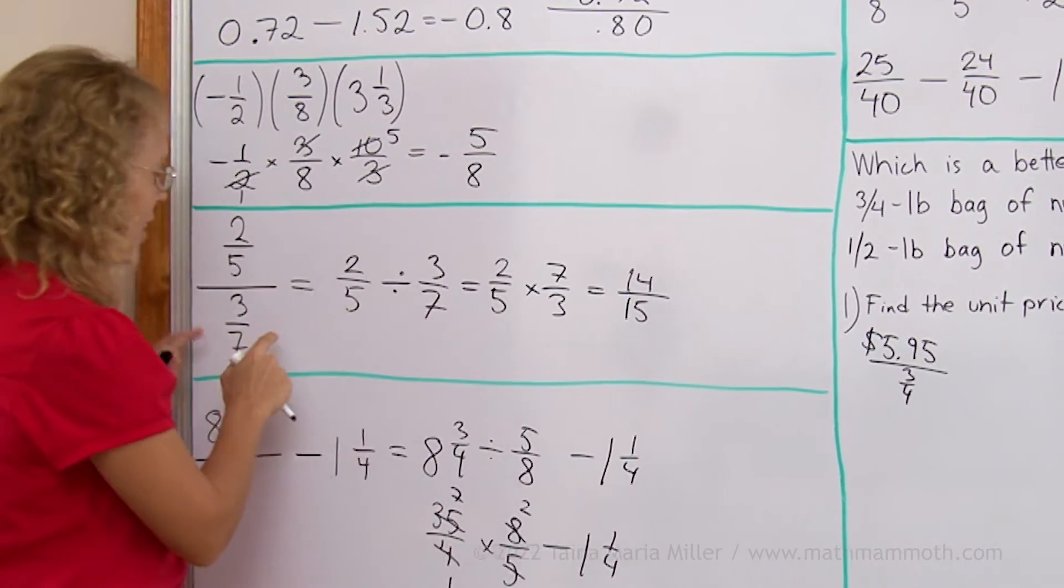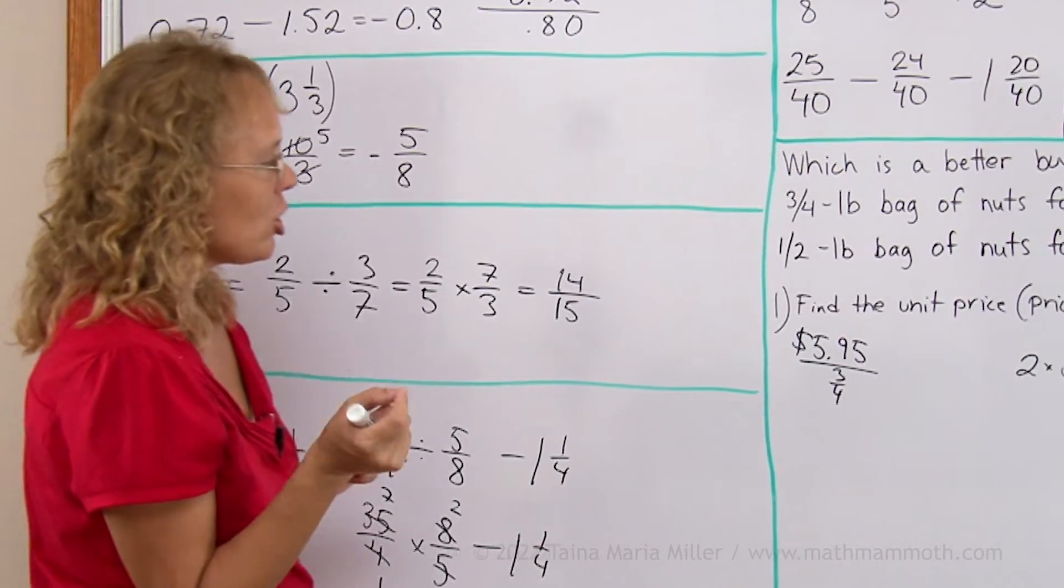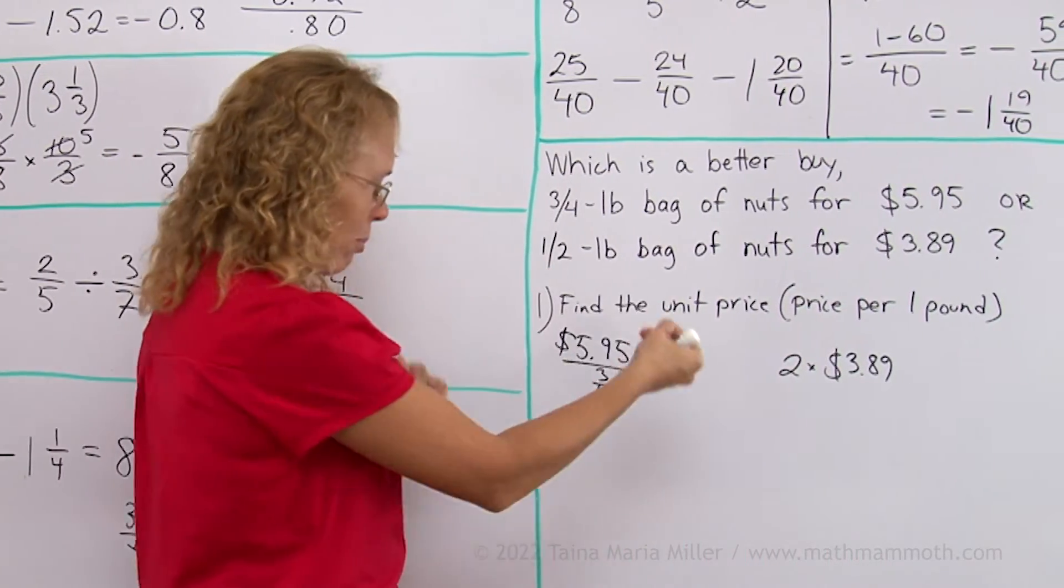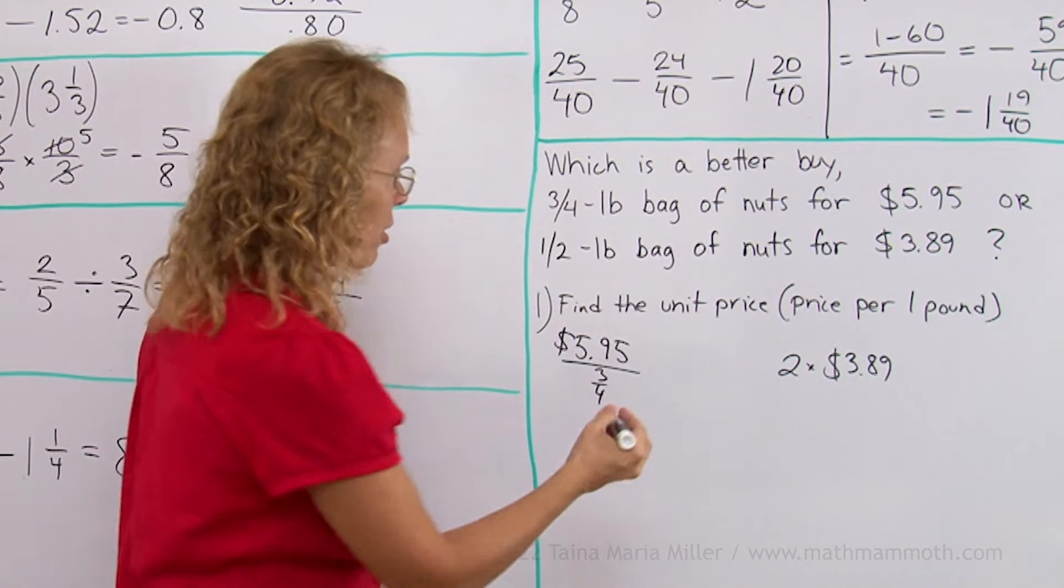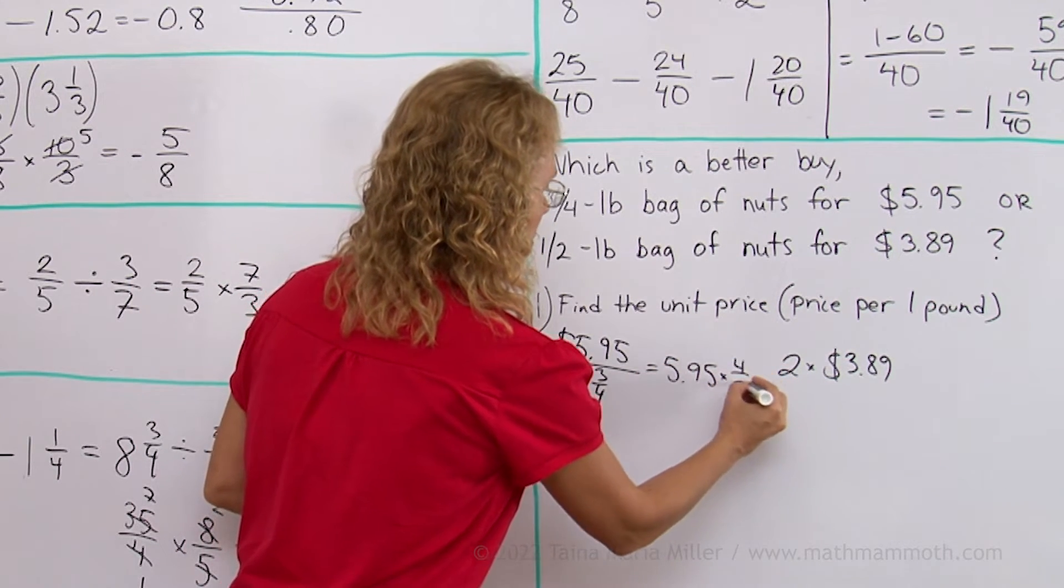...is not any more complex than what was here. It is a division by a fraction. So it changes into a multiplication by 4/3. So the actual calculation is this number times 4/3.